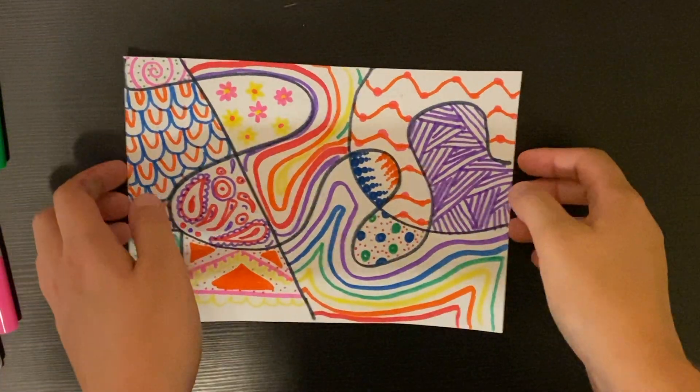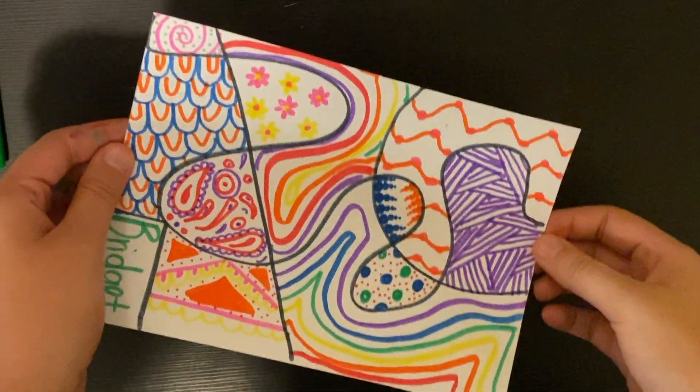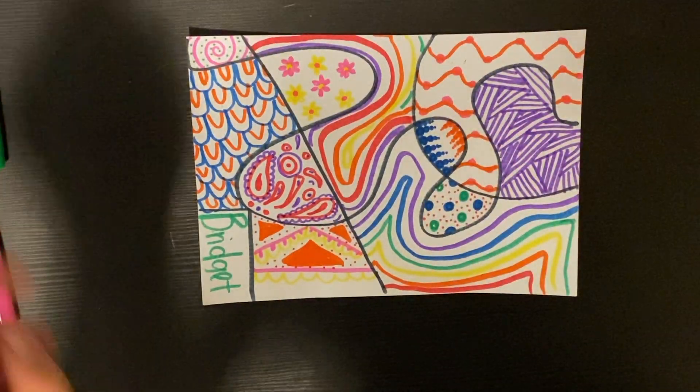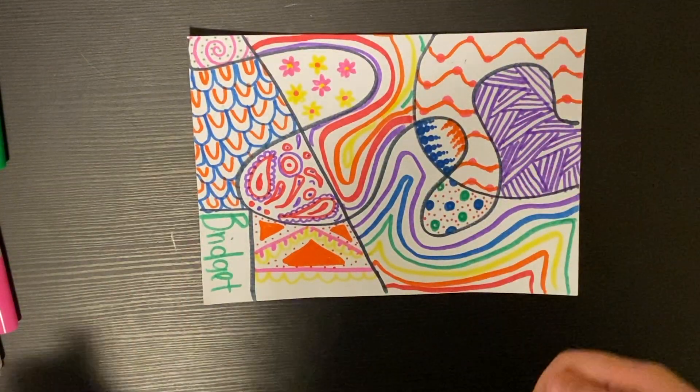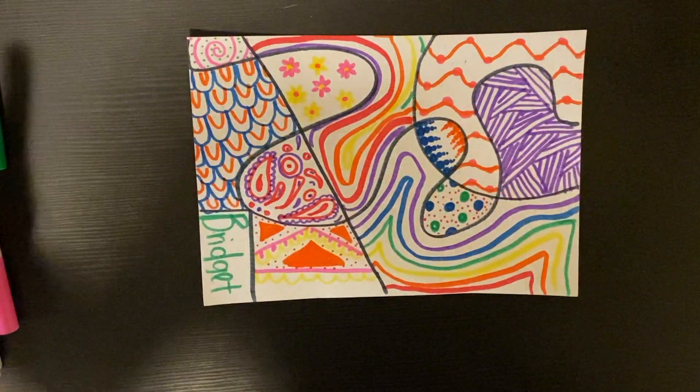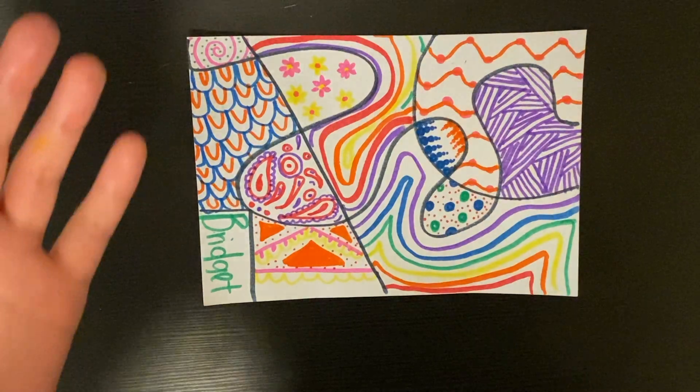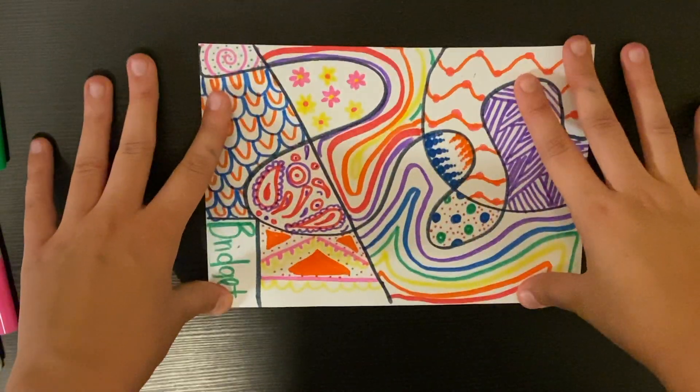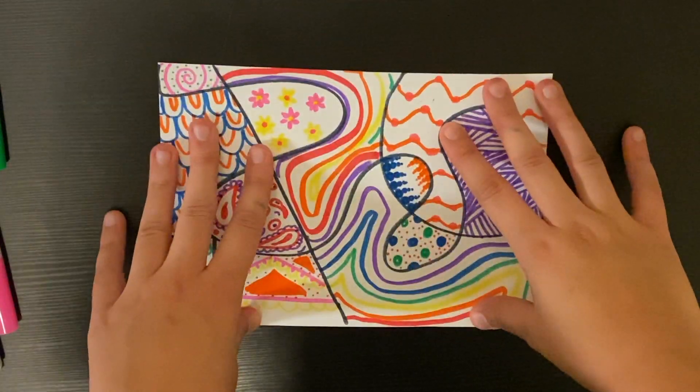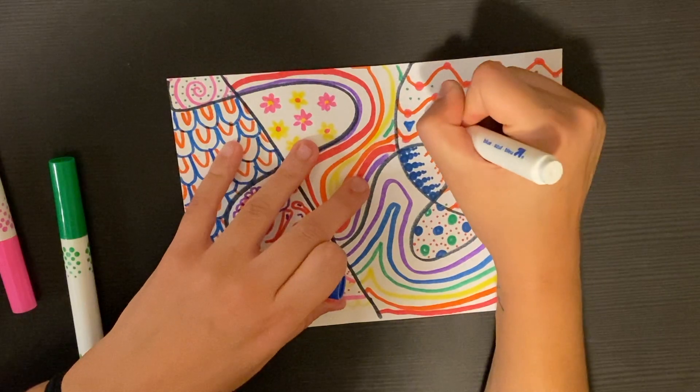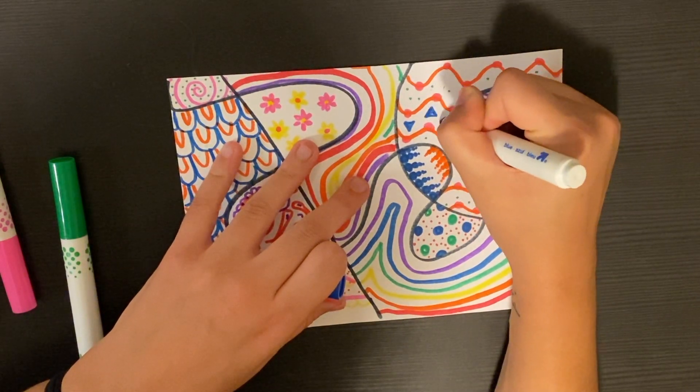Alrighty, so I have drawn in every single section of my paper. I even added my name because every artist has to add their artist signature to their piece of art. But if you're at the spot where I'm at and you've drawn in all of your sections and you think, well, what else could I do? Well, is there any spaces on my paper where I haven't drawn or doodled in yet? And if there are, see if you can go back and add more to those empty spaces.